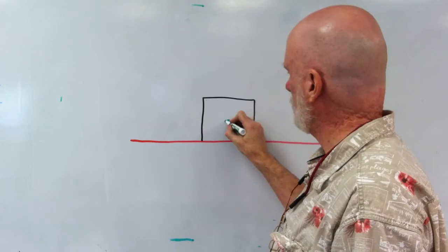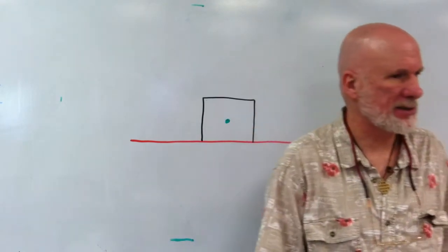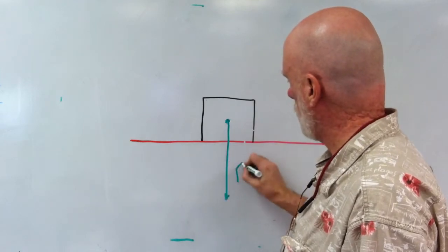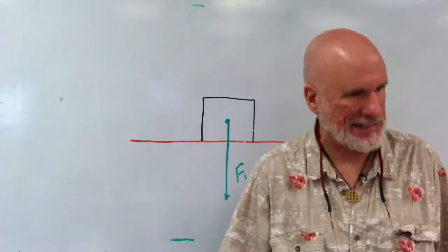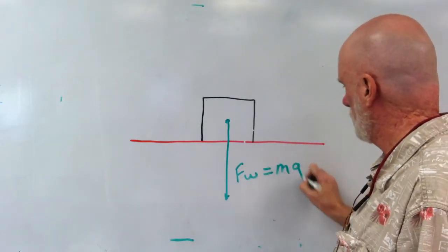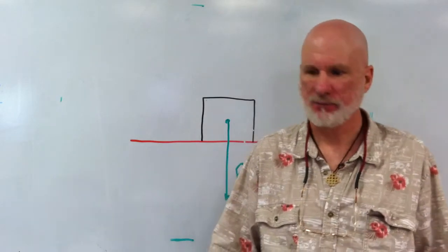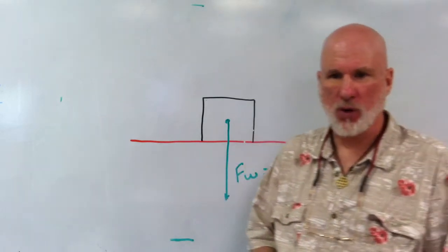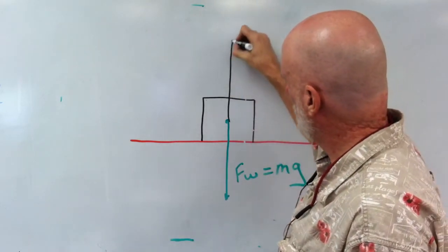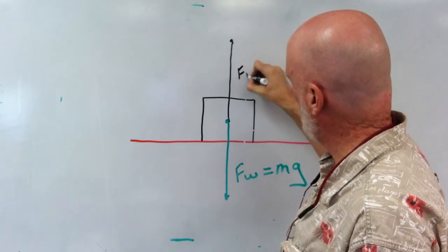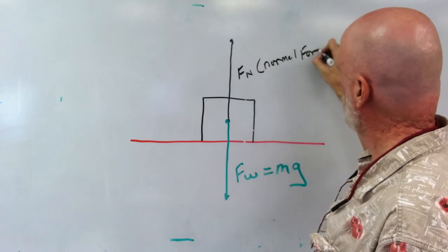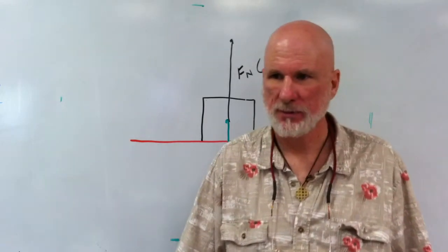So I have two forces acting on that box as it's sitting there doing nothing. There's the weight of that box, which we'll call FW, and weight is simply mg, correct? Now, the other force that exists on that box is the FN, or the normal force.